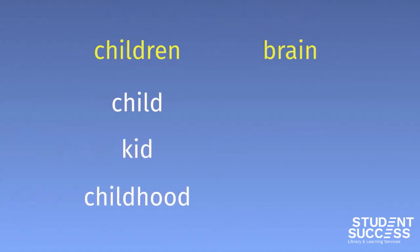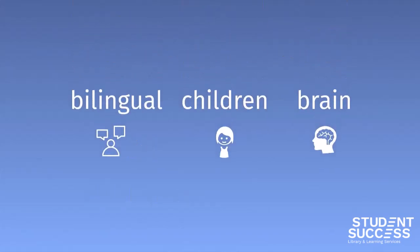So for the word children, we could also use the words child, kid, and childhood. And for brain, we could also use a related word like cognitive. Now we need to put these together with our other words.